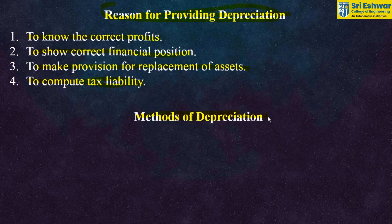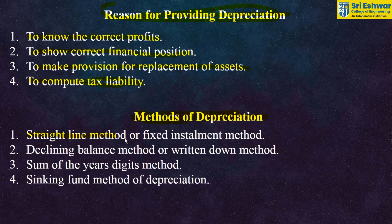We have four methods to find the depreciation cost. First is the straight line method, often called the fixed installment method. Second is the declining balance method or written down method. Third is the sum of the years' digits method. And last is the sinking fund method of depreciation.